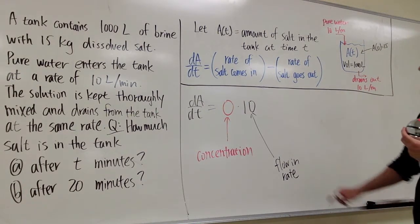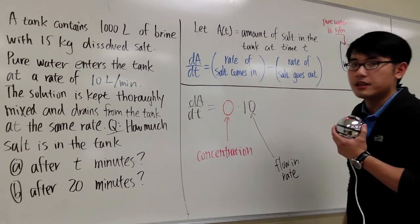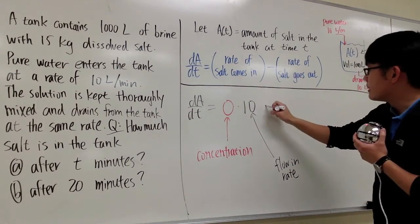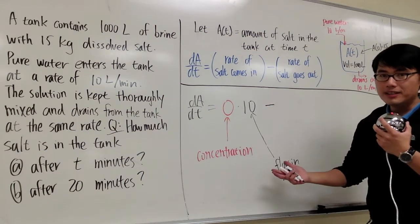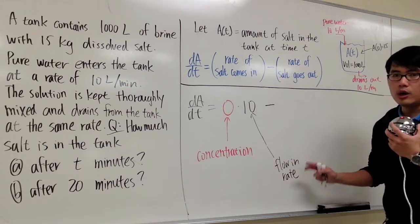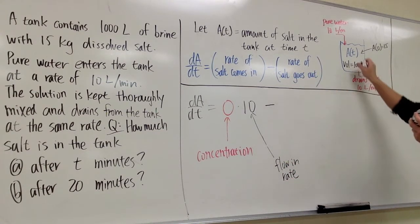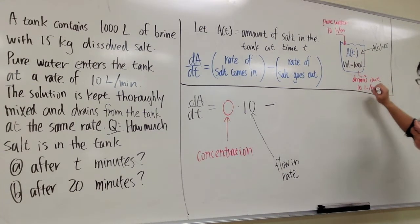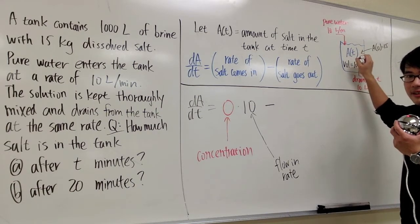And if you multiply these two together, you can get the rate of the salt that goes in. And then we are going to subtract the rate of the salt that goes out. But it will be the same setup. We need to take the concentration and then multiply with the flow out rate. That's how we can calculate the rate of salt goes out. But then when we drain out the solutions from the tank, we need to first figure out what's the concentration of the solutions in the tank.